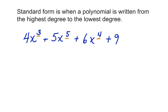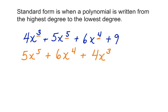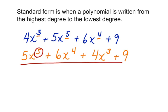There's also a constant. So if we were going to write this polynomial in standard form, we would have to rewrite it and switch around the order of the terms. We would start with 5x to the fifth, plus 6x to the fourth, plus 4x to the third, plus 9. And if we wanted the degree of the whole polynomial, we would choose the greatest degree, which is 5. So this polynomial is in standard form and it's a polynomial to the fifth degree.